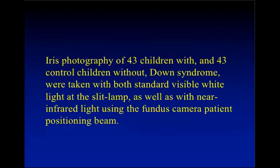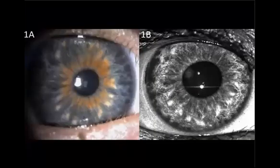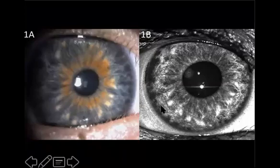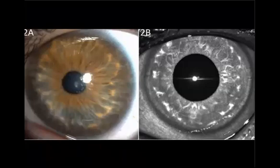We took iris photographs of 43 children with and 43 control children without Down syndrome, taken both with standard visible white light at the slit lamp, as well as with near-infrared light using the fundus camera patient positioning beam. Those with lightly colored eyes with iris spots or nodules already visible in standard white light — we could not detect additional spots or nodules using near-infrared wavelengths. As we see here with regular white light, we saw the nodules, and using near-infrared light we saw them as well, but not any more nodules than we otherwise would have.